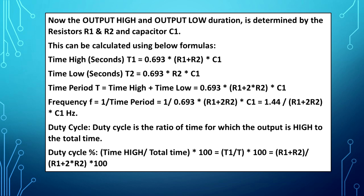Duty cycle is the ratio of the time for which the output is high to the total time. Duty cycle percentage = (T1 / T) × 100 = (R1 + R2) / (R1 + 2×R2) × 100.